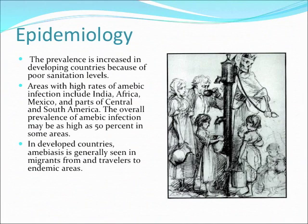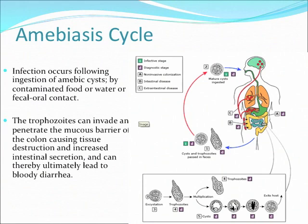In countries like the U.S., you see this disease basically from people that are coming from these endemic areas. The cycle starts when cysts and trophozoites are passed in the feces. Once the cysts are in the environment, they mature, and then a person gets infected through contaminated water or food, and then the cysts go to the colon.